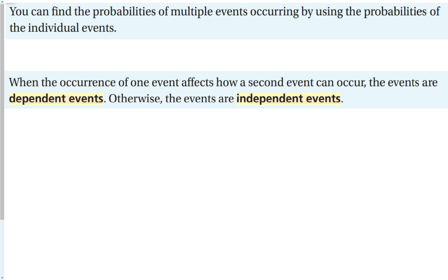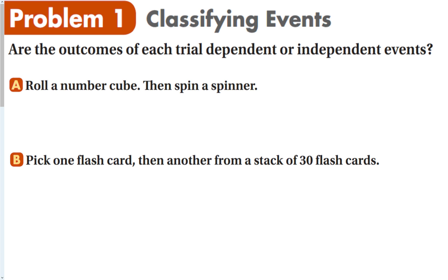Here are a couple of examples for classifying events as independent or dependent. The trick is to think: did what I do with the first event affect the second event in any way? So when we look at this — are they dependent or independent? You roll a number cube, then you spin a spinner. There's nothing in common there, so these would be independent.